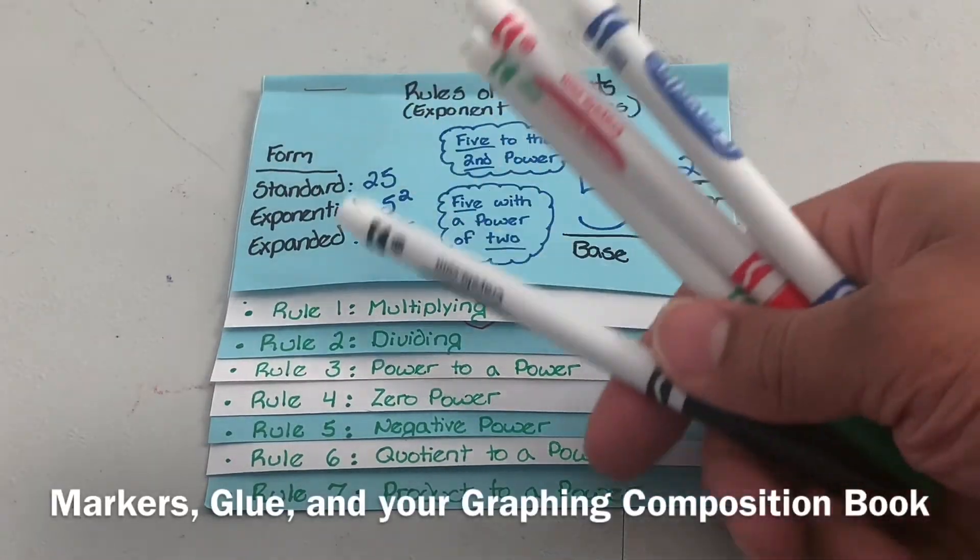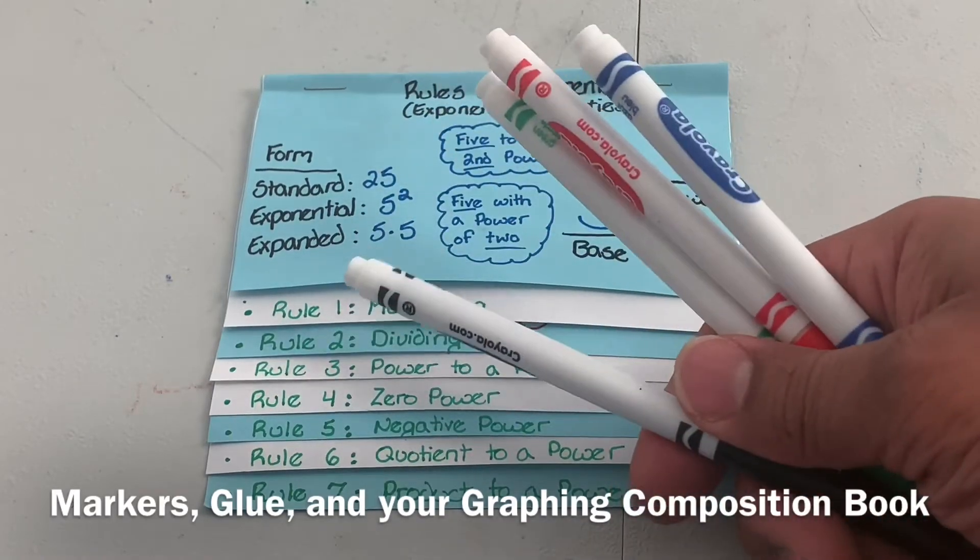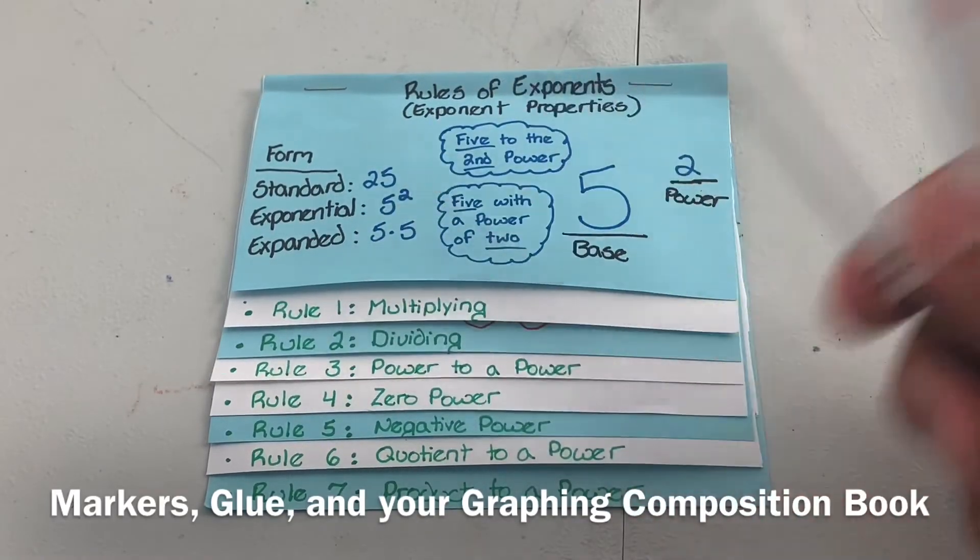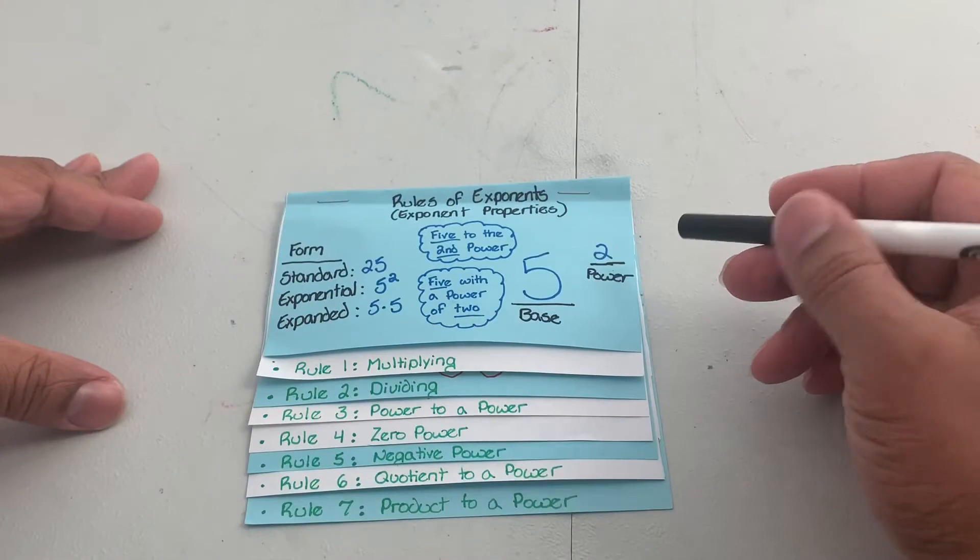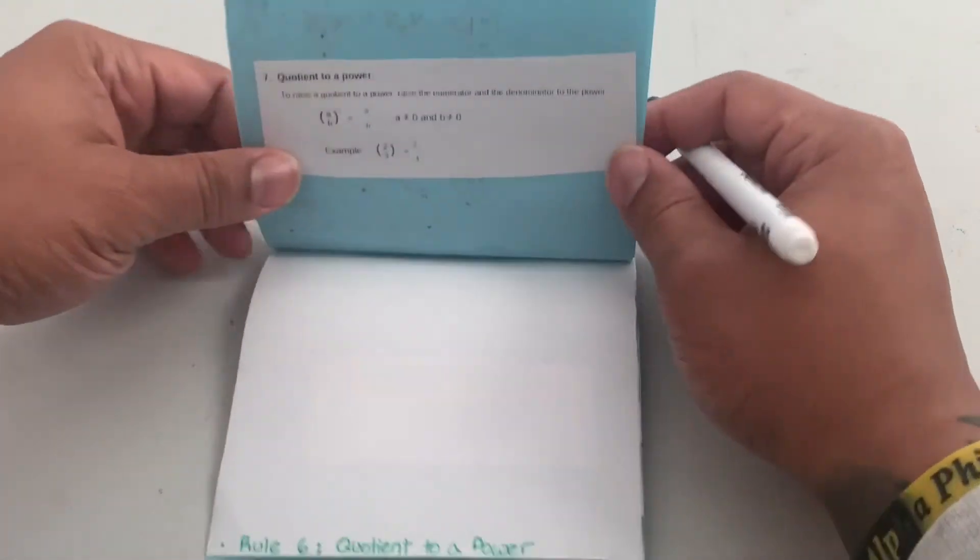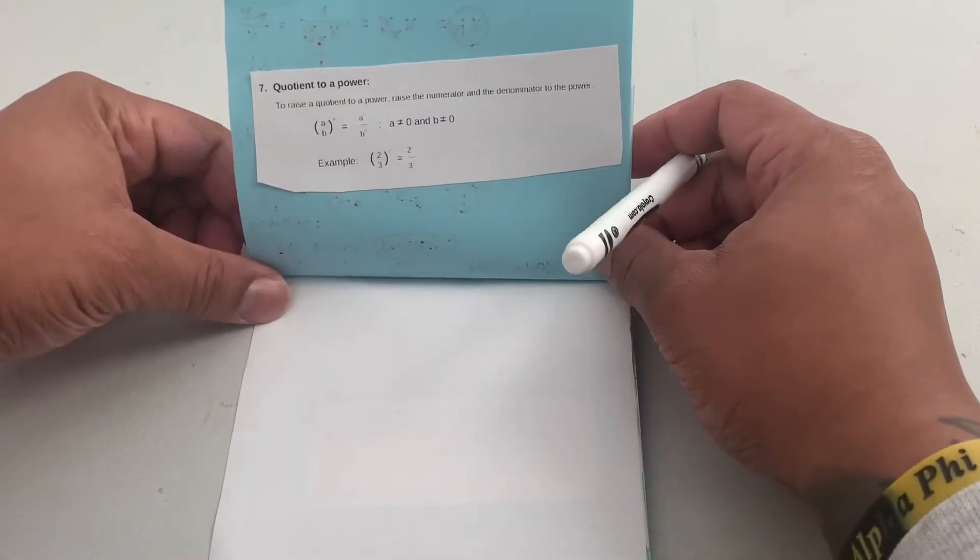Okay, in this video all we're going to need is a few markers. That's all you're going to need. Alright, let's get started. Go ahead and flip to rule six.